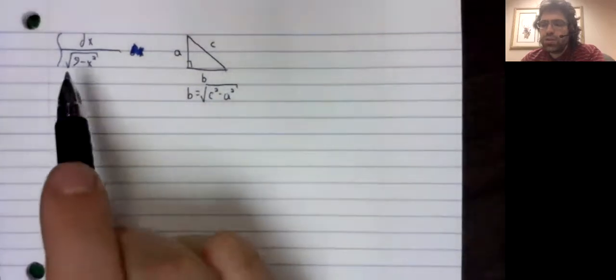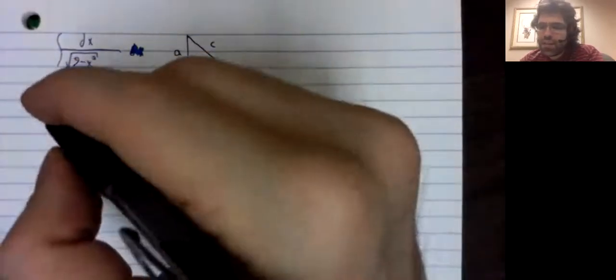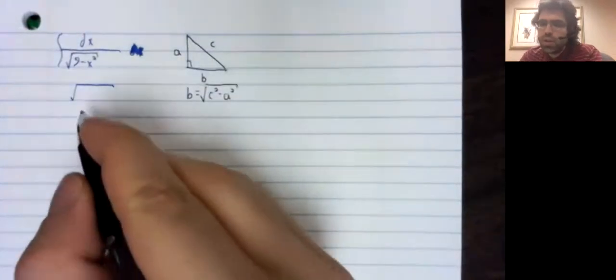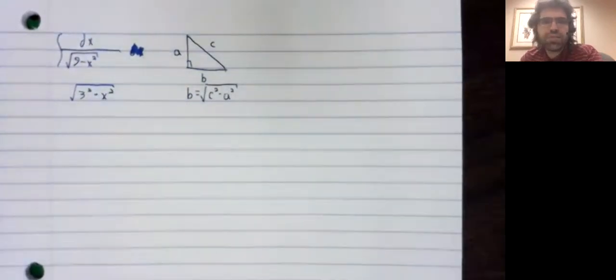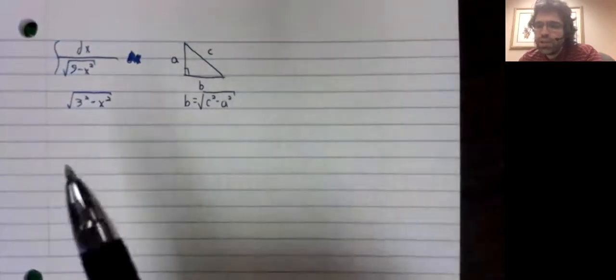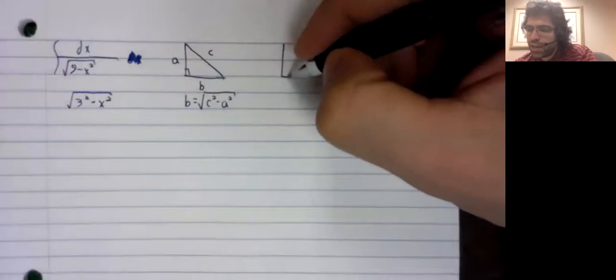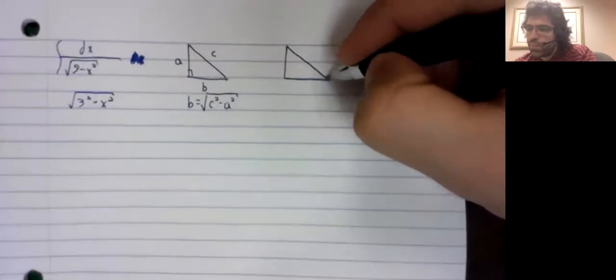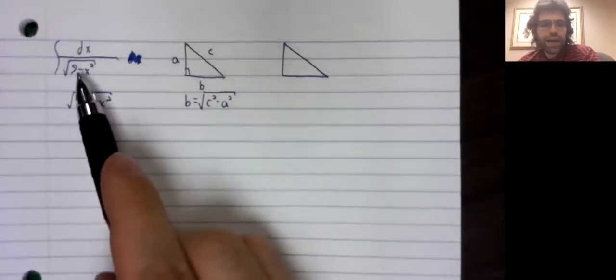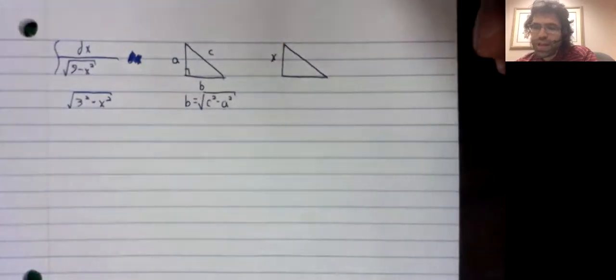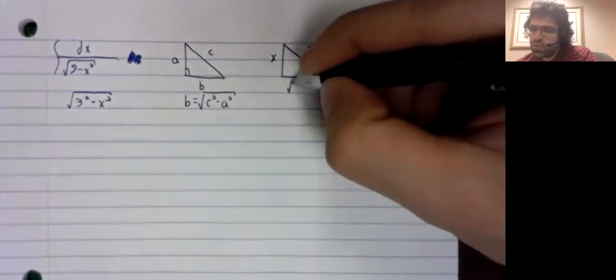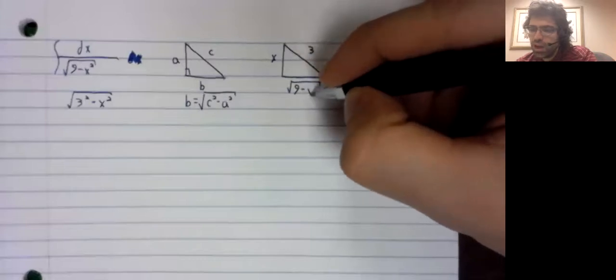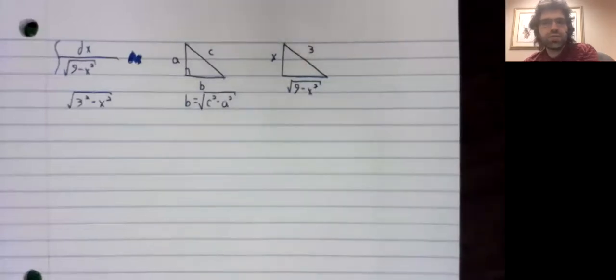And this looks a lot like what we have here. Here we have the square root of three squared minus X squared. So, we could draw a right triangle where this square root appears. If X is one of the legs and three is the hypotenuse, this other leg is this square root.